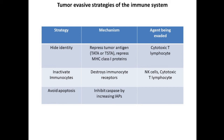Next, tumor cells can inactivate immunocytes. By certain mechanisms the tumor cells destroy immunocyte receptors. One example is the CD8 molecules present on cytotoxic T lymphocytes. Another molecule is the MICA receptor expressed by NK cells — the tumor cell inactivates the receptors present on NK cells, thereby protecting itself from NK cell activity.